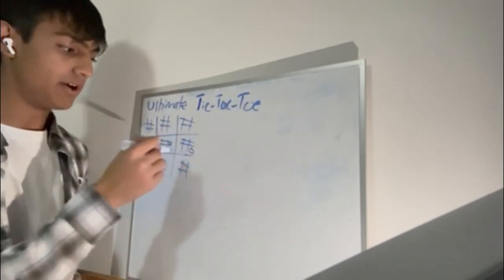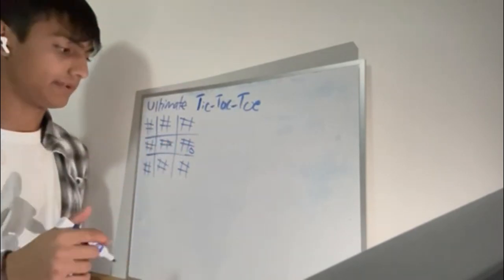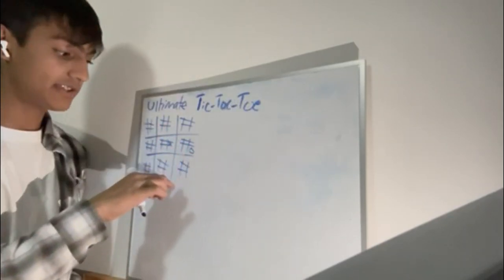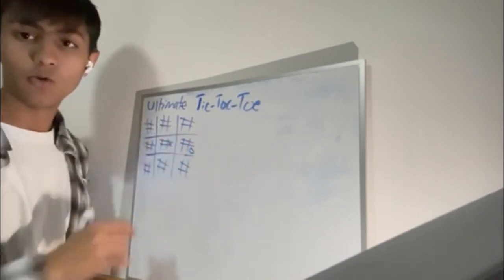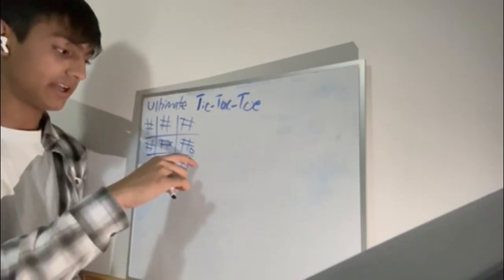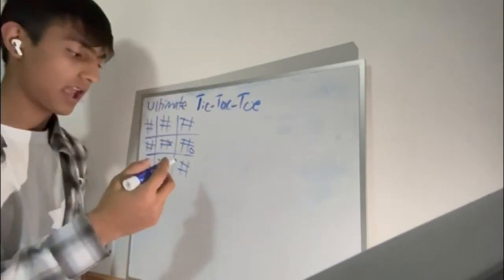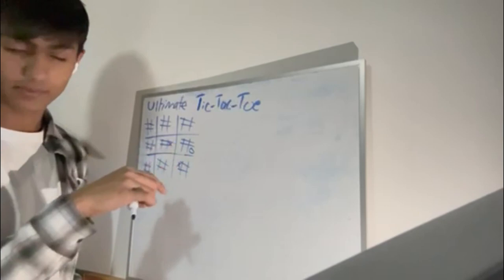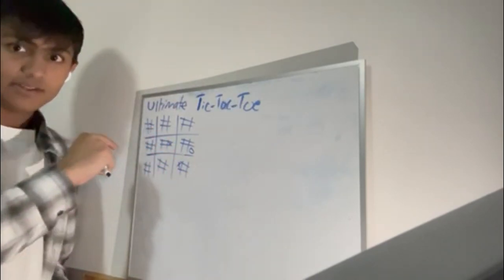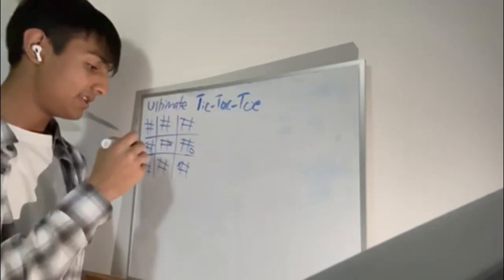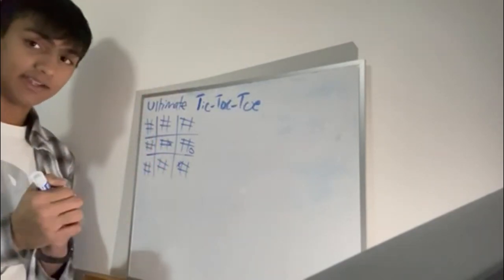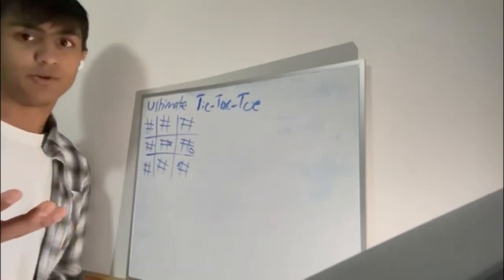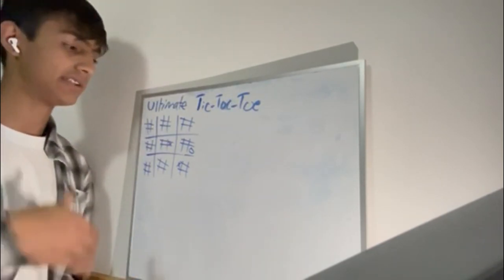So if X plays in the middle-right, O has to now play somewhere in the middle-right big square. Let's say O plays in the bottom-right of that big square. Now it's X's turn, and X is sent to the bottom-right big square because of where O played. X plays middle-left of that small grid, and now O is sent to the middle-left big square. So your move decides where your opponent gets to play next — it just keeps going on like that.